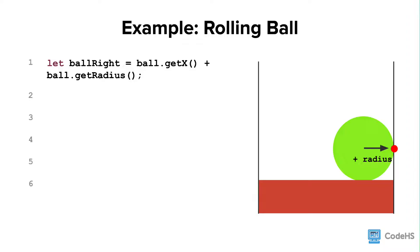Next, to get the coordinate of the right side of the ball, we need to add the radius of the ball. Now that we know where the right side of the ball is, we want to check if it has reached the right wall. Remember, the right wall has an x coordinate of get width.